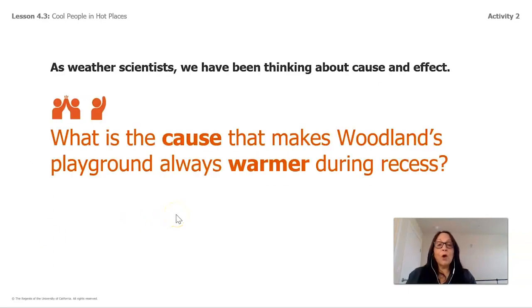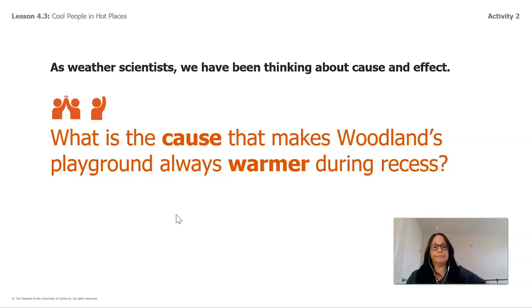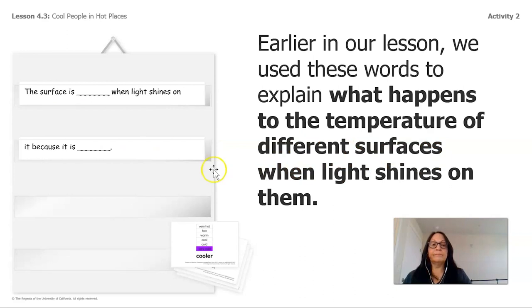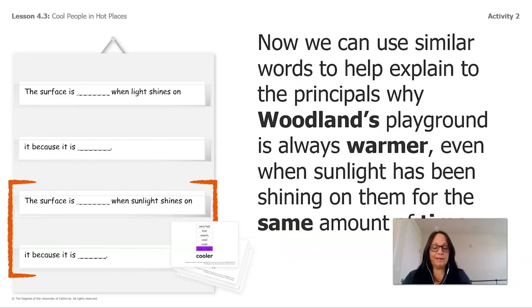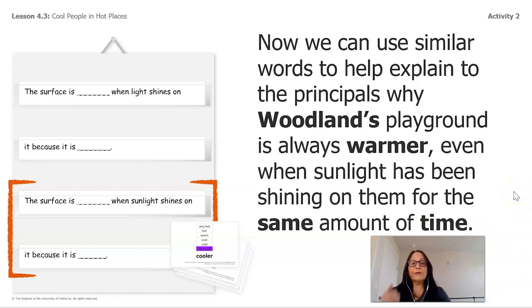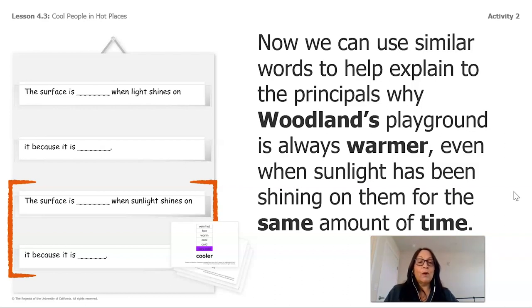As weather scientists, we have been thinking about cause and effect. What is the cause that makes Woodland's playground always warmer during recess? Earlier in our lesson, we used words to explain what happens to the temperature of different surfaces when light shines on them. Now we're going to do the second part of the question. The first one talks about light shining, and the second one talks about sunlight shining.